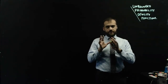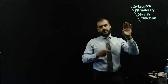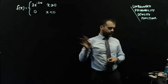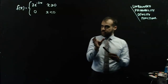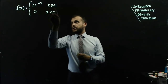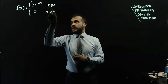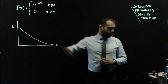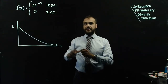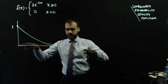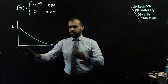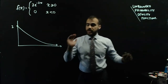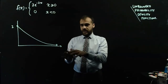In the real world, a lot of probabilities are best modeled using unbounded probability density functions. This is an unbounded probability density function — it's defined when x is greater than or equal to 0. It's an exponential decay curve with an asymptote at y equals 0, meaning it gets closer and closer to the x-axis without ever actually touching it.